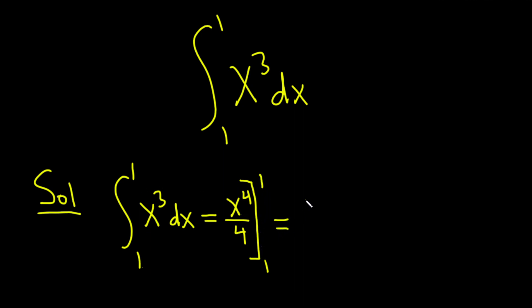And you plug in the top number first so you get 1 to the 4 over 4. Subtract and then plug in the bottom number so you get 1 to the 4 over 4. So we just get 1 over 4 minus 1 over 4 and so we get 0 and the answer is 0.